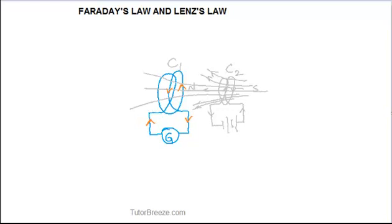In this case too, there is an induced EMF and hence an induced current. When the current in coil C2 reaches a final steady value, the number of field lines through C1 also stops changing and the induced EMF as well as current both disappear. If there is no current in coil C2, then there is no changing magnetic field through C1 either and the induced current does not happen.